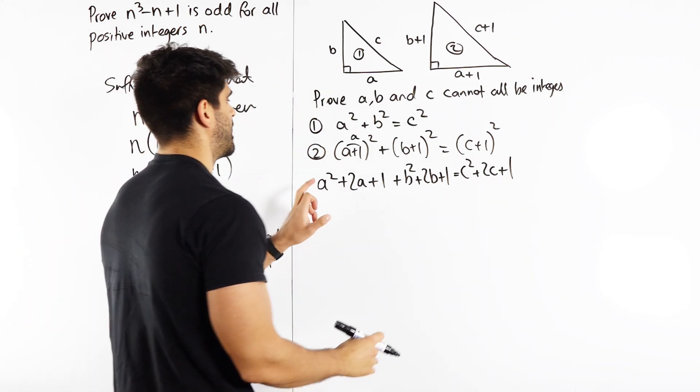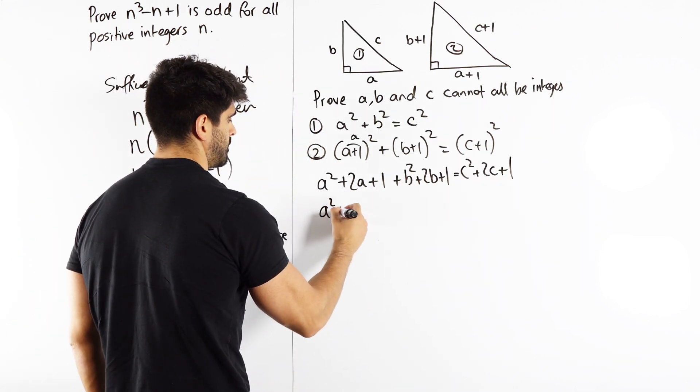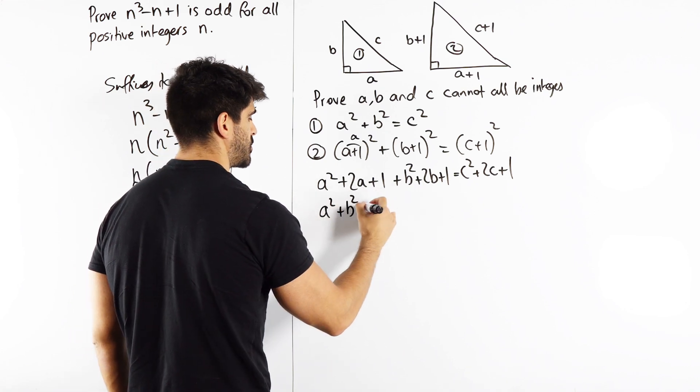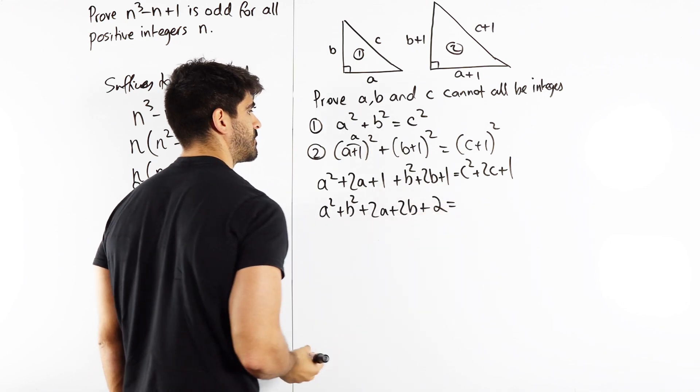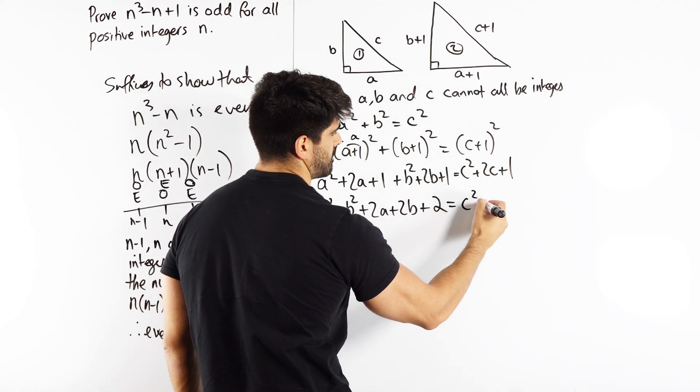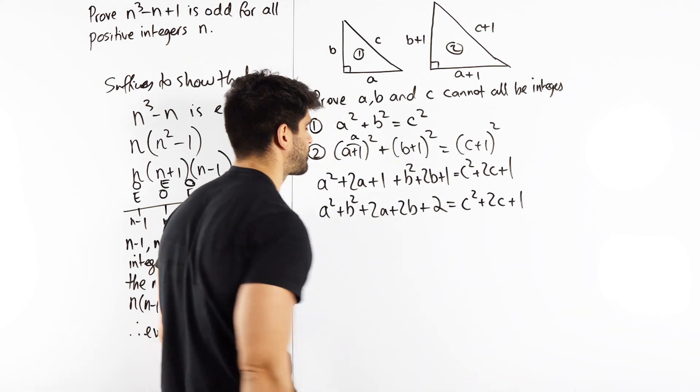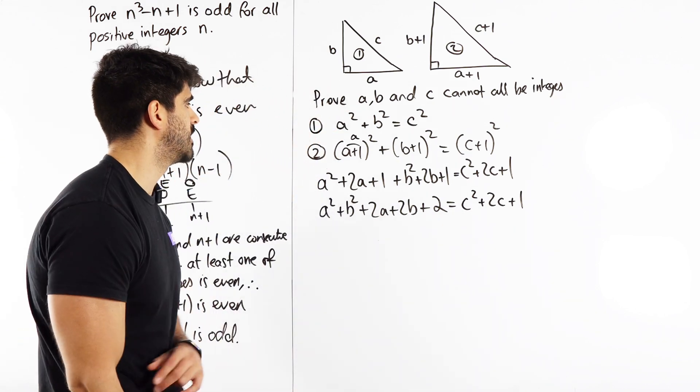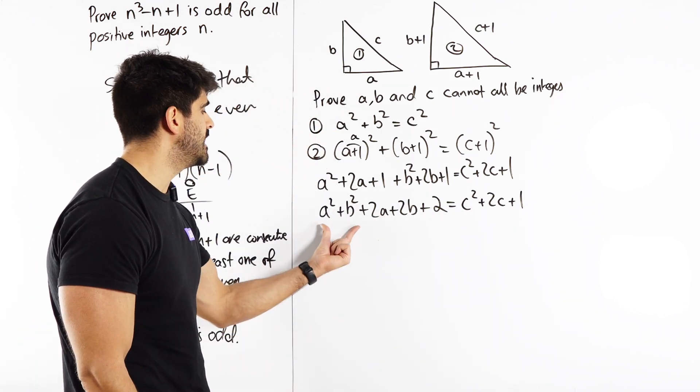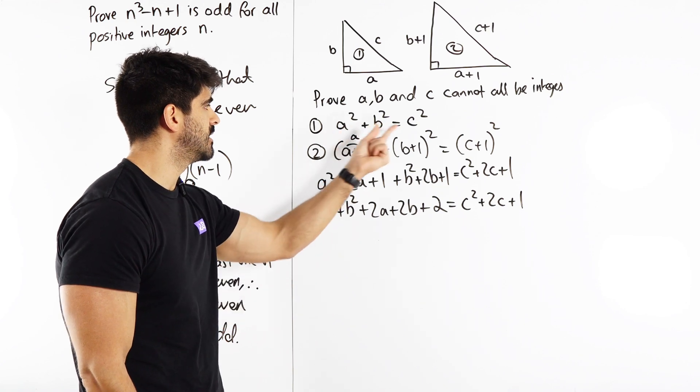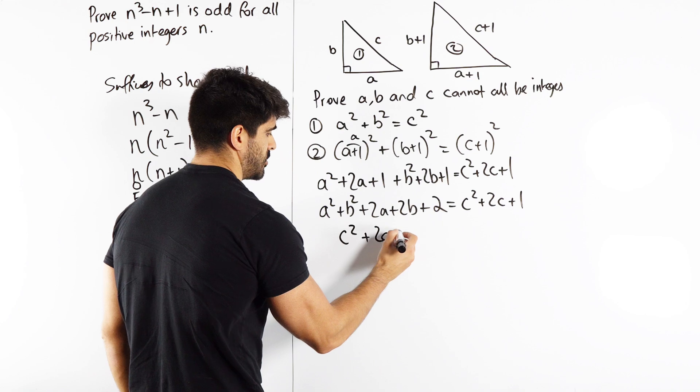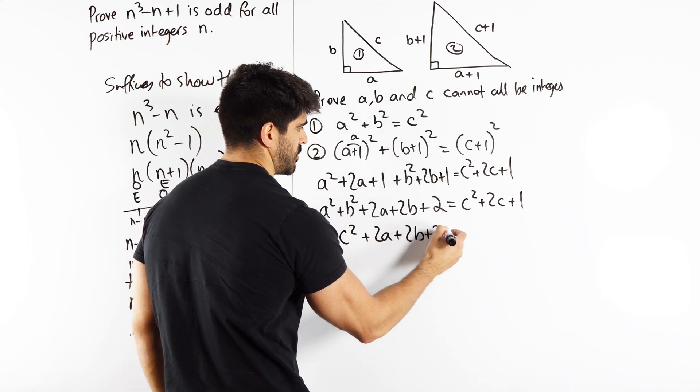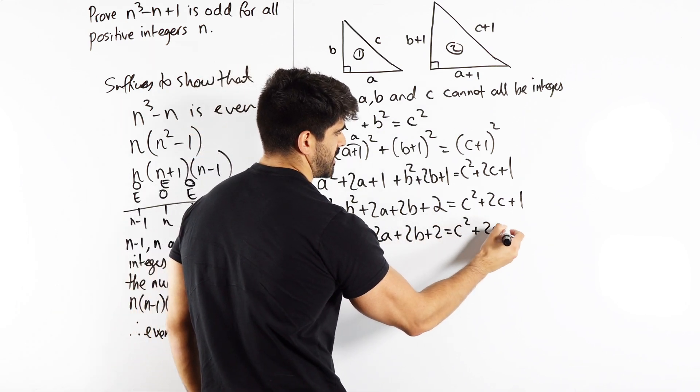Now when we simplify, I have A² + B². I have 2A + 2B. And I have 2. Then here, I just have C² + 2C + 1. Now what do I know here? I know A² + B² = C². So I have C² + 2A + 2B + 2 = C² + 2C + 1. What can I do there? I can cancel the C² from both sides.